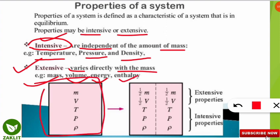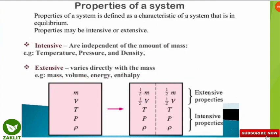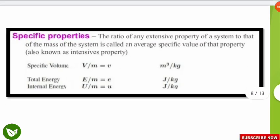Consider a system with mass m, volume V, temperature, pressure, and density. If we separate this container into two parts, the mass is divided — half in each part — and the volume is also divided. But temperature, pressure, and density are intensive properties and remain the same, because they have no dependency on mass. So extensive properties like mass and volume change when mass changes, but intensive properties do not.